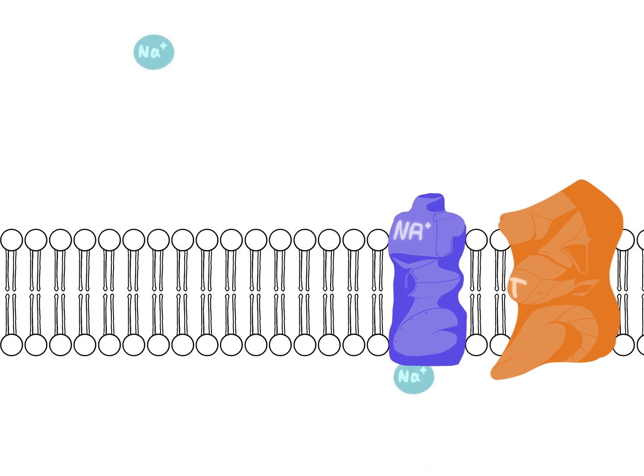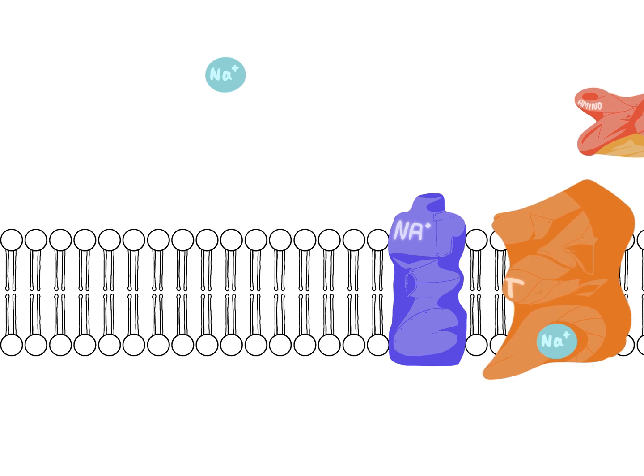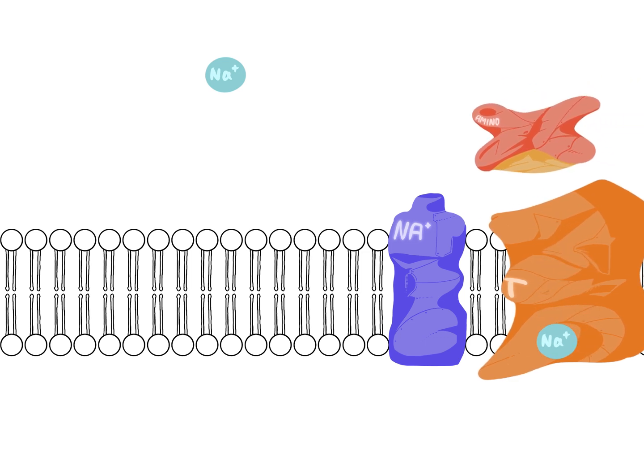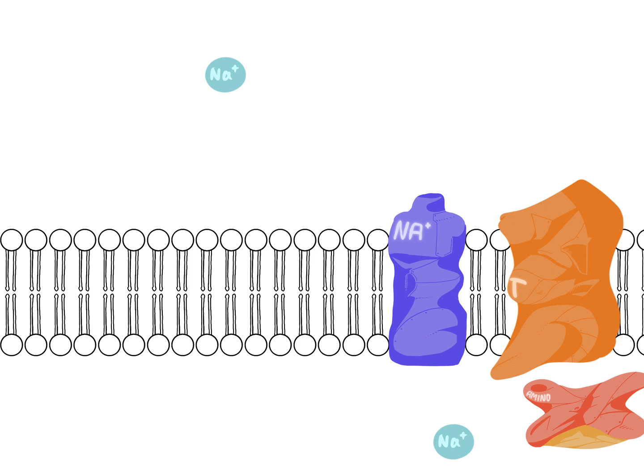First of all, the ion pump pumps sodium ions outside the cell, creating a higher concentration of sodium ions outside the cell than the inside of the cell. Because of the concentration difference, the ion binds with the transport protein and changes its shape to fit an amino acid. The amino acid then binds with the transport protein. When both the sodium ion and the amino acid are in place, the transport protein changes shape once again and spits out the amino acid and the sodium ion inside the cell.